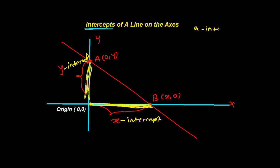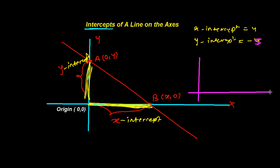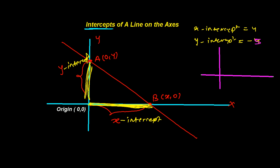For example, if the x-intercept equals 4 and the y-intercept equals minus 5, then on my axis, x-intercept is positive 4, so I mark one, two, three, four — there's one point. And y-intercept is minus 5, which is downward, so one, two, three, four, five — the point is here.